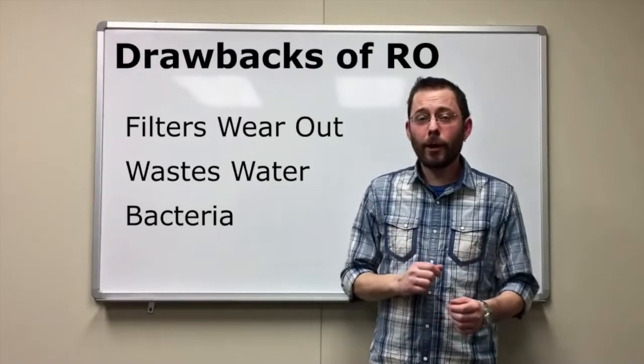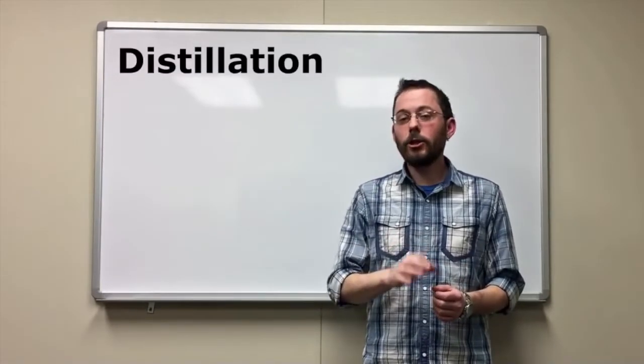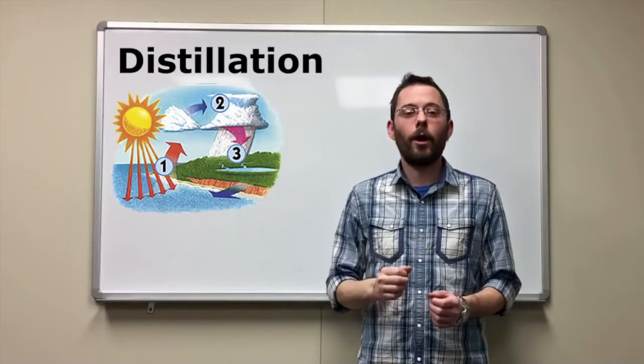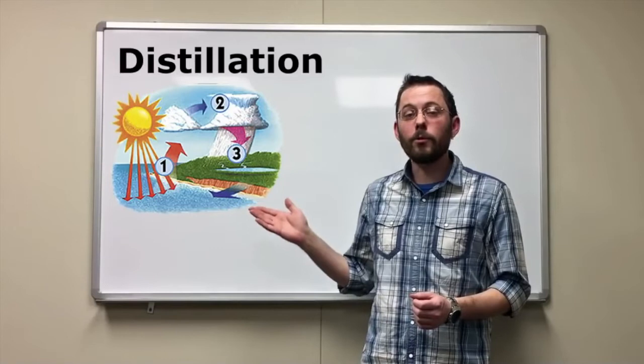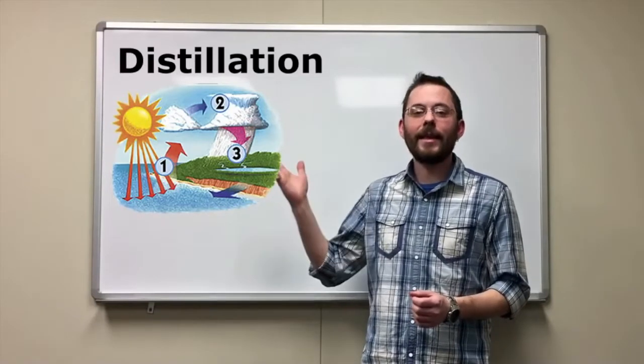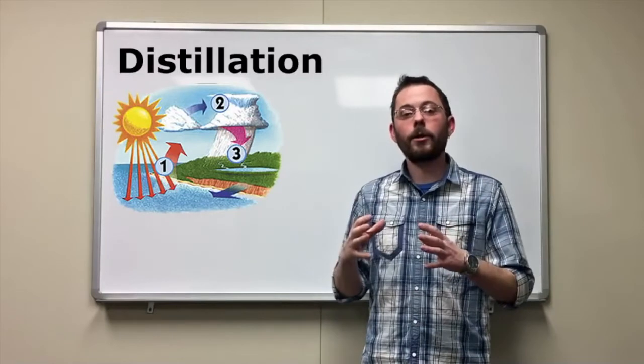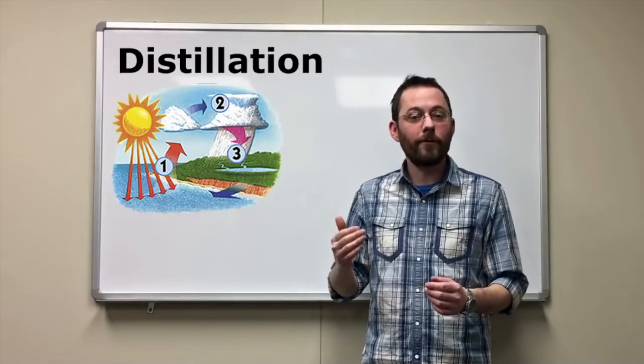The final form of purification I would like to discuss is distillation. Distillation mimics the hydrologic cycle that nature uses to purify water. The sun heats up the water on the ocean until it becomes water vapor and rises into the air. Once it gets high enough, it begins to condense and form clouds. Then it falls as rain to replenish oceans, rivers, and streams.